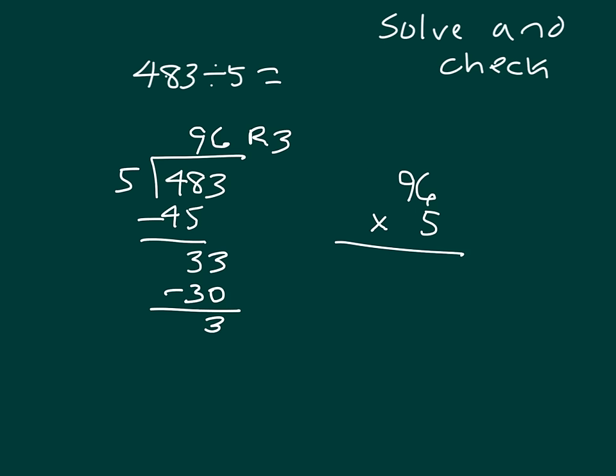Work on through this. We get 5 times 6 is 30: 0, regroup with 3. 5 times 9 is 45, plus 3 is 48. 480 does not match 483, because we still have to add in the remainder of 3.